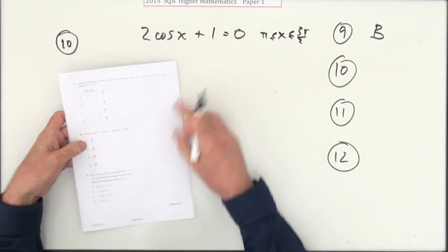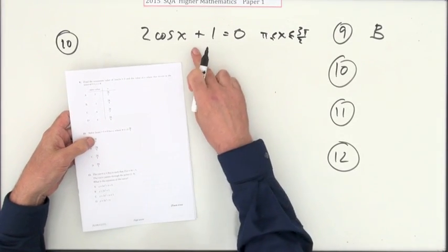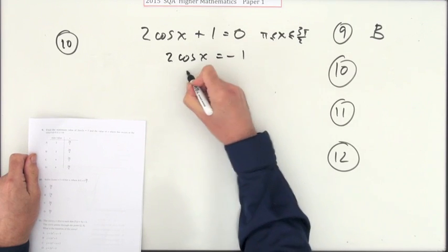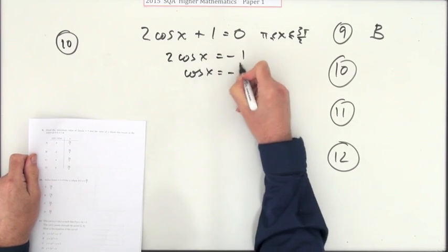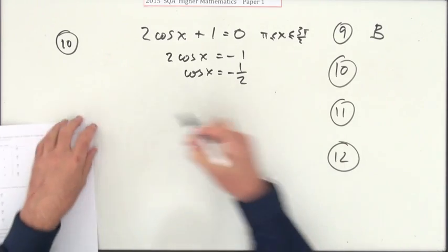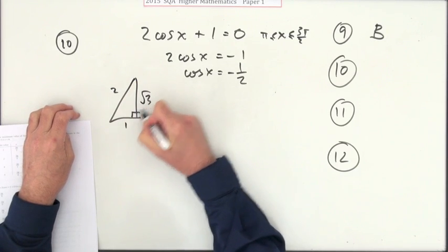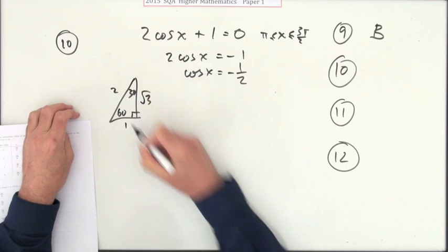Number 10. Solve this little equation. Well, you just flip the side, so 2cos(x) will be negative 1, so cos(x) will be negative a half. And then there's that same triangle again, so it's the 1, 2, √3.